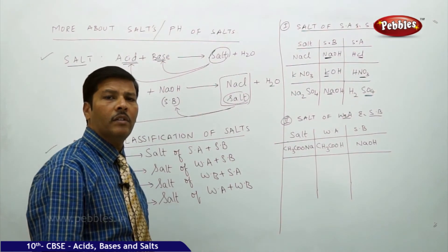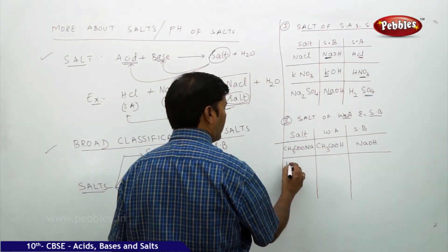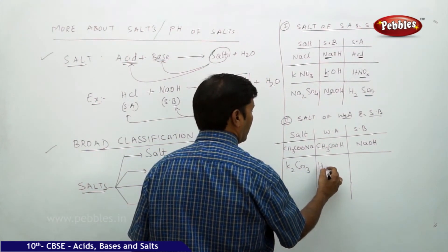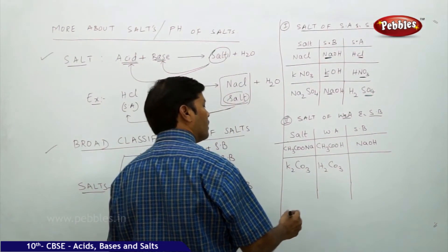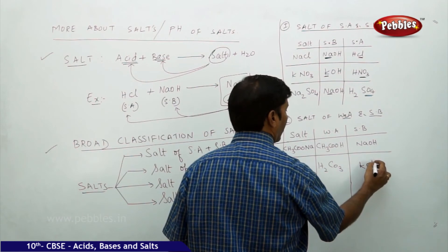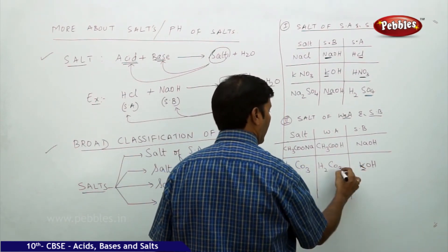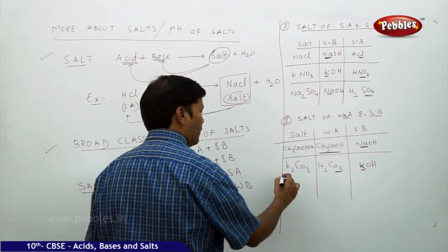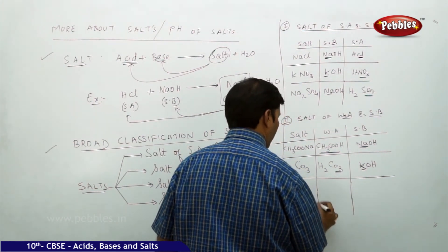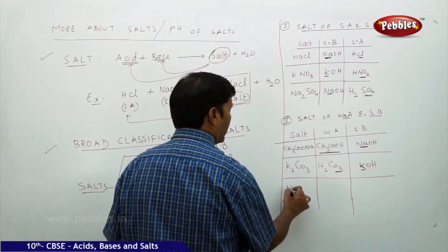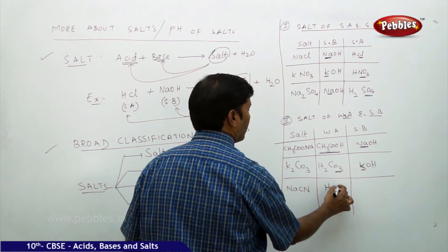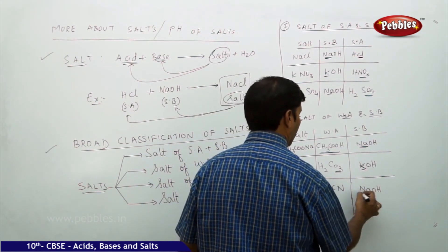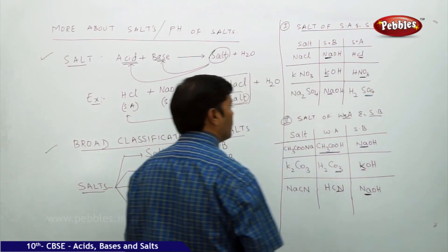We can also take potassium carbonate, which contains weak acid H2CO3 and strong base KOH (potassium hydroxide). Similarly, sodium cyanide (CN⁻) — hydrogen cyanide is a weak acid and sodium hydroxide is a strong base. These are all examples of the second category.